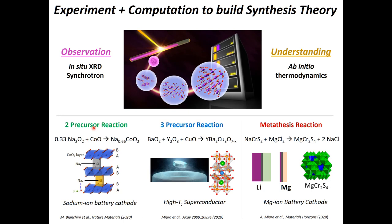I'm going to talk about three stories today. The first is a two-precursor reaction between sodium peroxide and cobalt oxide to form sodium cobalt oxide, an important sodium ion battery cathode. Then I'll discuss a three-precursor reaction for forming the classic high-temperature superconductor yttrium barium copper oxide. Finally, I'll talk about a metathesis—also known as ion exchange—reaction to form magnesium chromium sulfide, computationally predicted to be a compelling magnesium ion battery cathode.